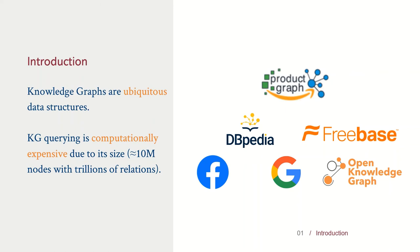Knowledge graphs are comprised of individual or group of entities connected by relations. This structure makes them suitable for several data storage scenarios. However, due to their large size, information retrieval through graph traversal, even with sorted ordering, is prohibitively expensive. Several knowledge graph datasets have close to 10 million nodes with trillions of relations between them, so development of a method that could effectively perform logical queries over knowledge graphs could greatly expand its application domains.